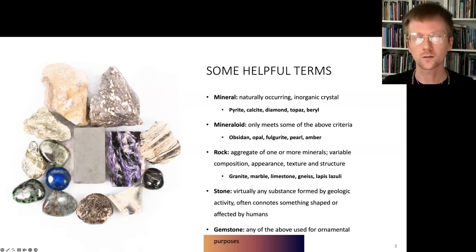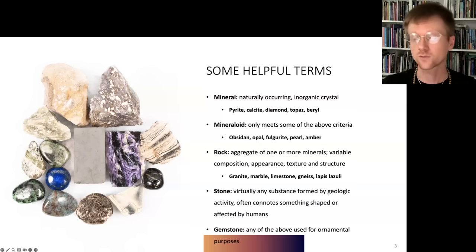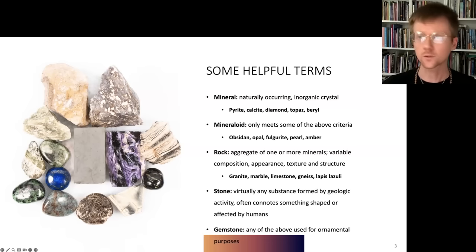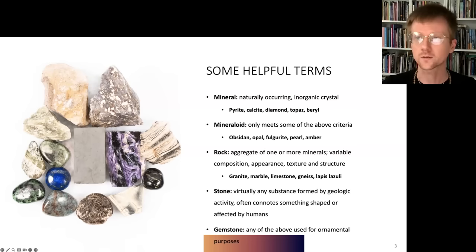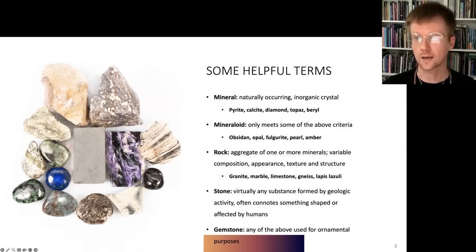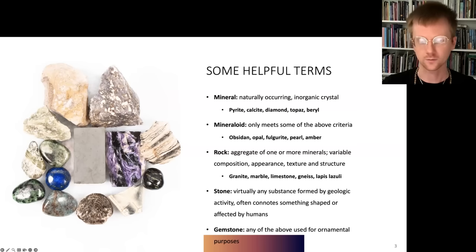Gemstone, or just gem, is any of the above if used for ornamental purposes. A single mineral like quartz could be cut and faceted, added to a ring, and it becomes a gemstone. You could take nephrite jade — technically a metamorphic rock — string it as beads to wear, and now it's a gemstone rather than just a rock. So gemstone also has a pretty variable definition.